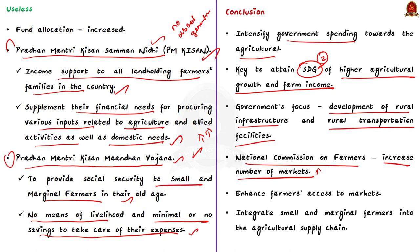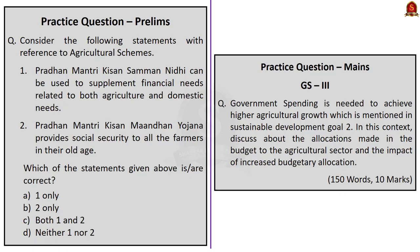These measures will play a crucial role in enhancing farmers' access to market and will integrate small and marginal farmers into the agricultural supply chain to a greater extent. In summary, we discussed the Agriculture Orientation Index, how government spending benefits the growth of the agriculture sector and overall economy, how the current budget allocation is lagging, and measures to improve agriculture's share of GDP.